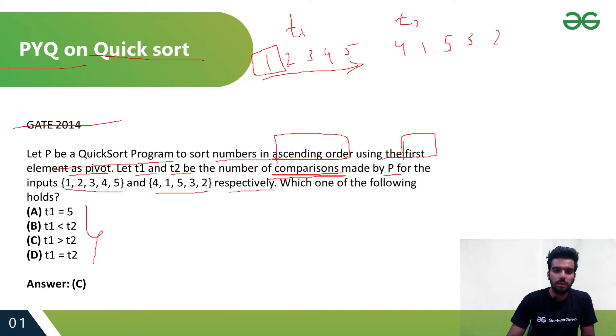For the sorted array, the pivot will compare with each remaining element — this, this, this, and this — and after the first iteration, 1 will be in its place only, and it will do quicksort again in the remaining array.